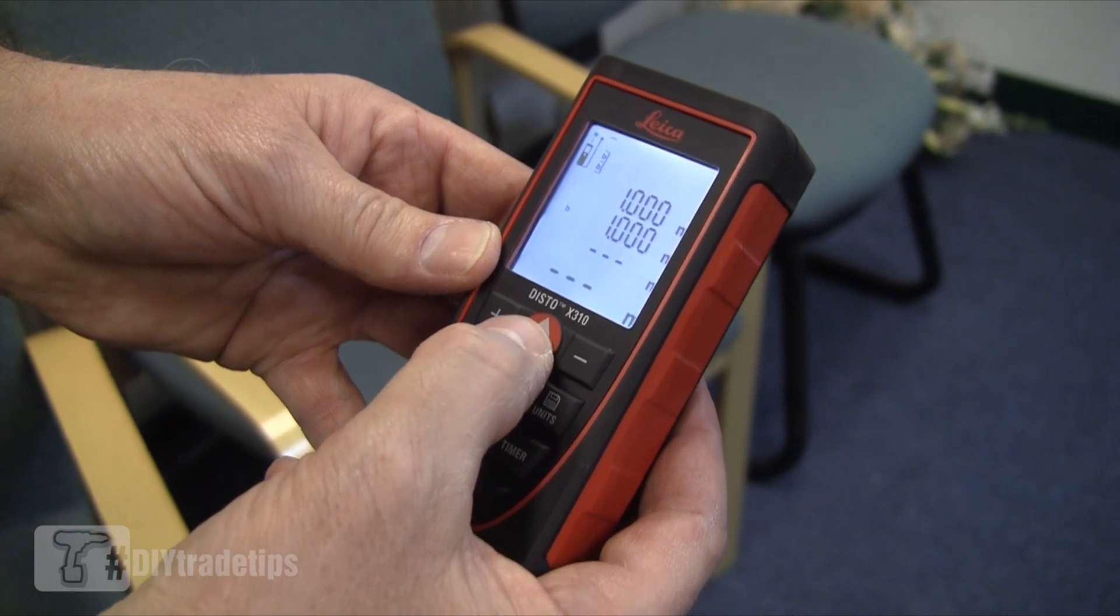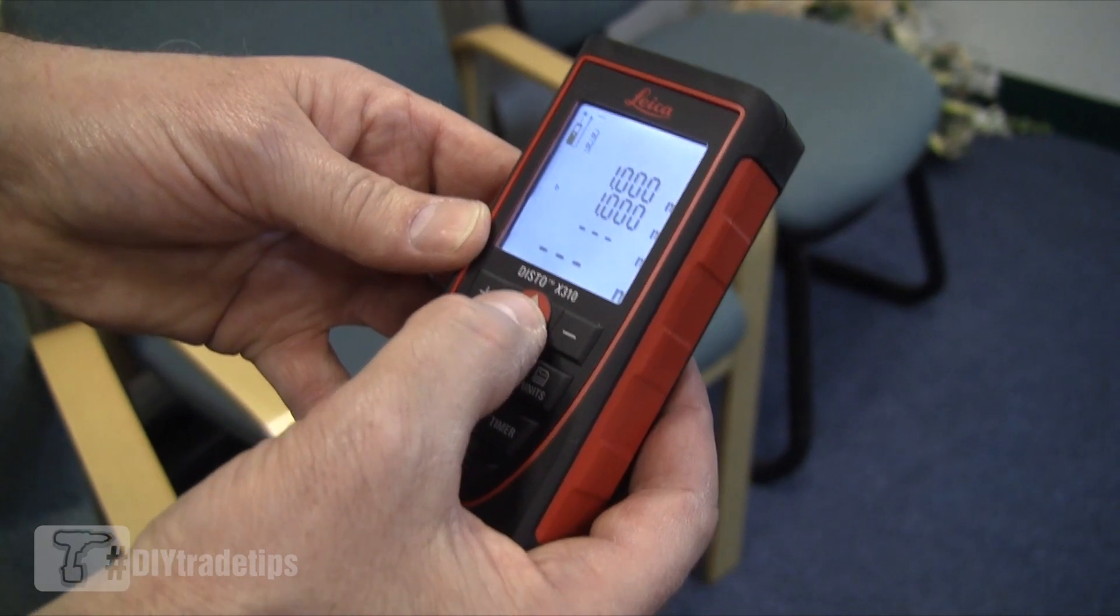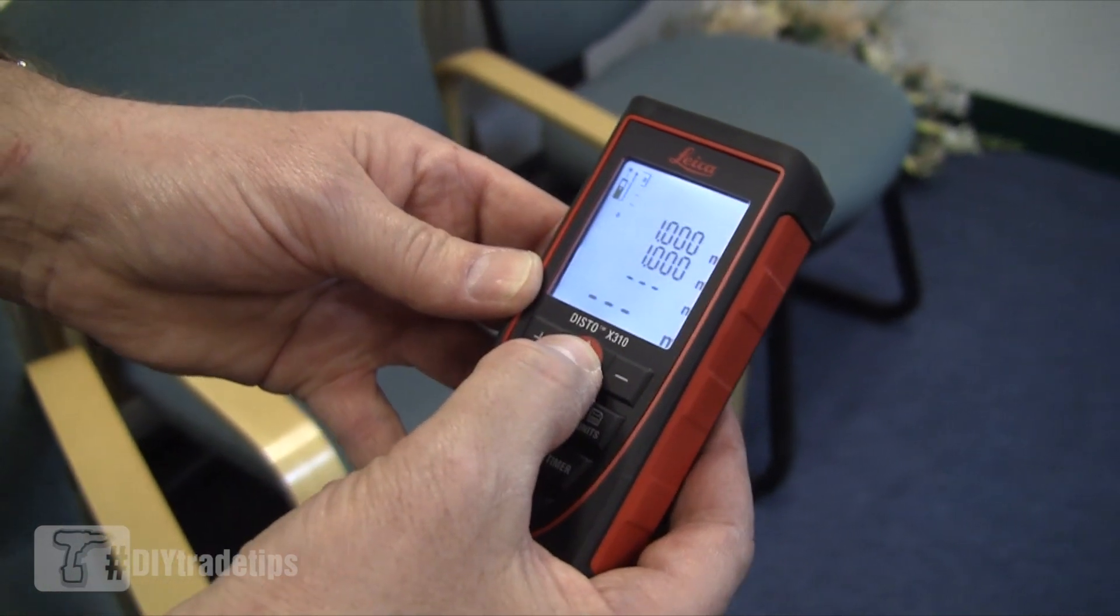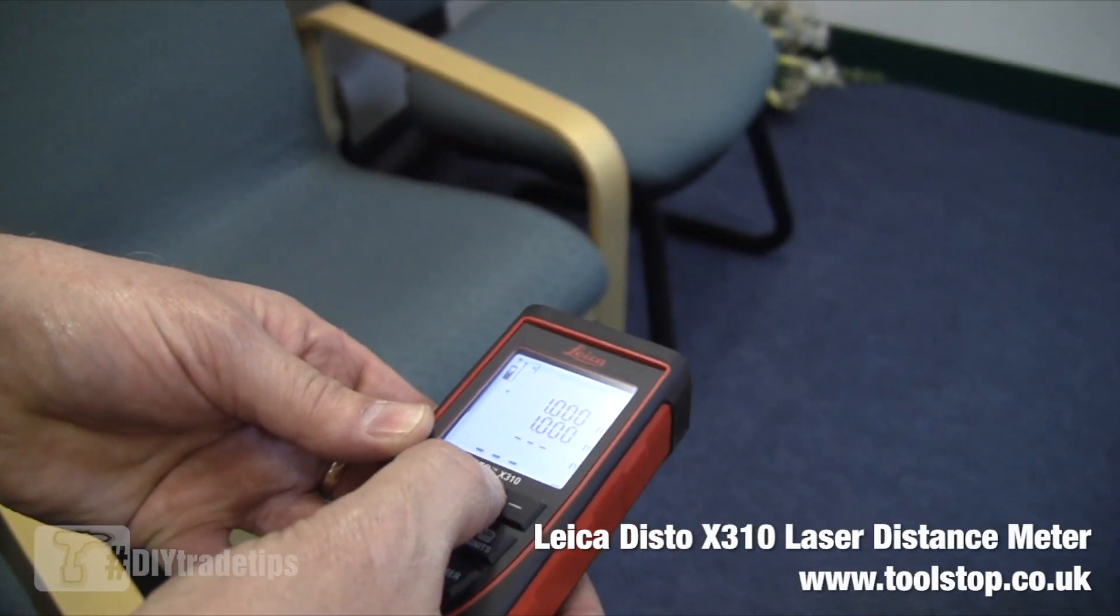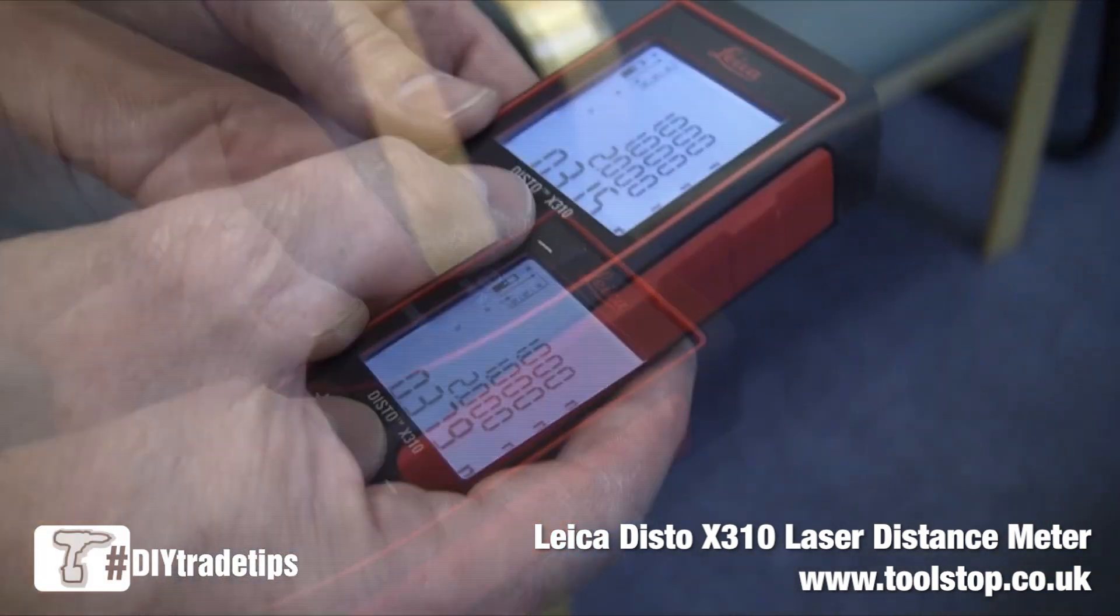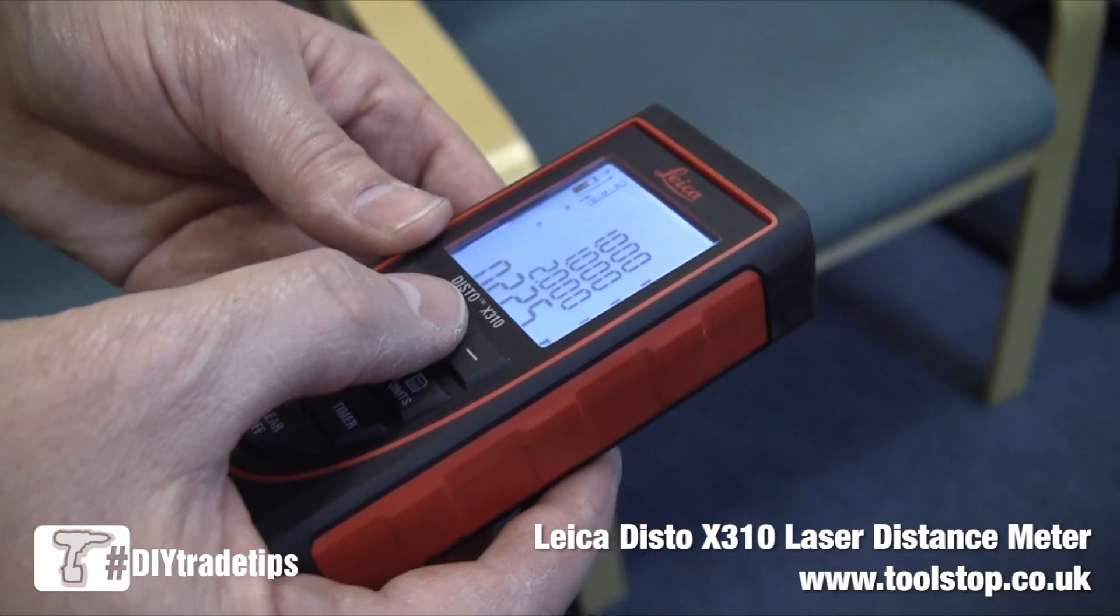We also have a stakeout function on the X310. We can put in our first distance and our second distance, take a measurement, and this now counts down until we're exactly at our first measurement.